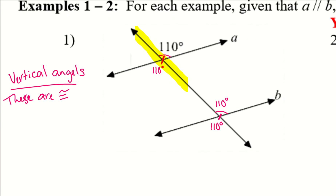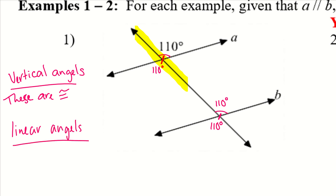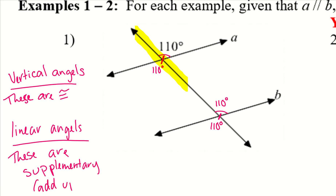That is a straight line, and straight lines are 180 degrees. So we will have a pair of linear angles, which we learned before as well. So these are supplementary — they add up to 180. So if these two angles are supplementary and add up to 180, I'm going to do 180 minus 110, so we get 70.